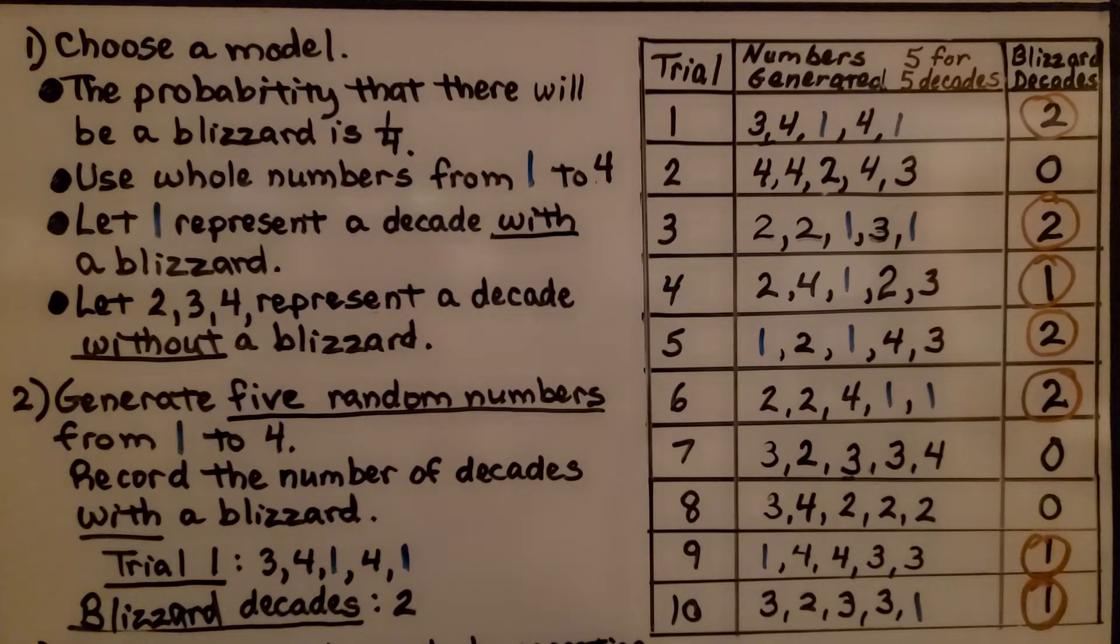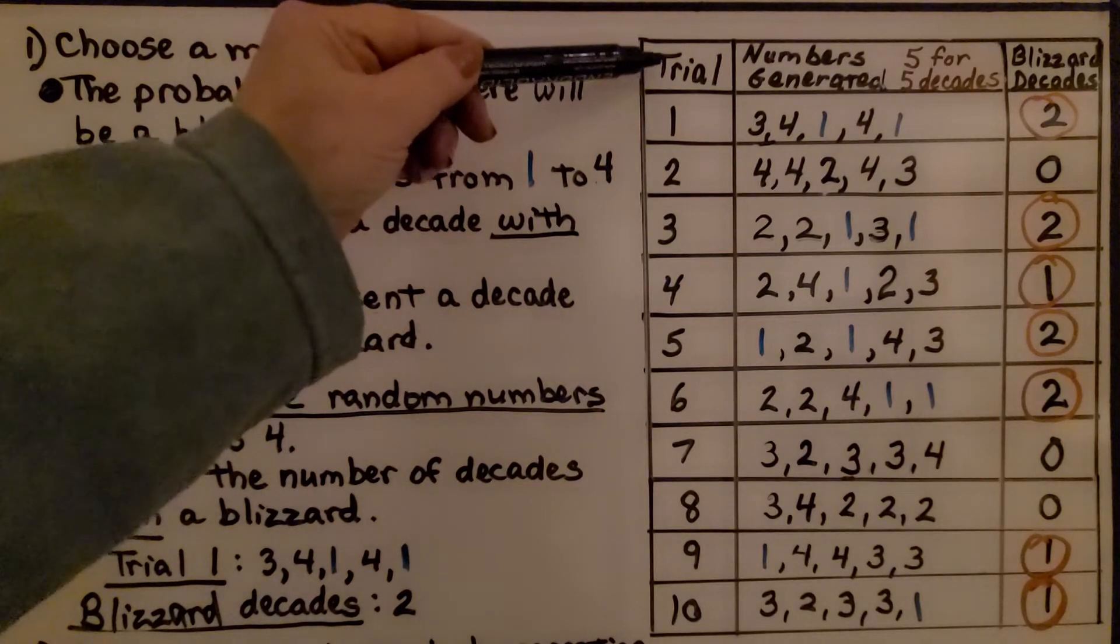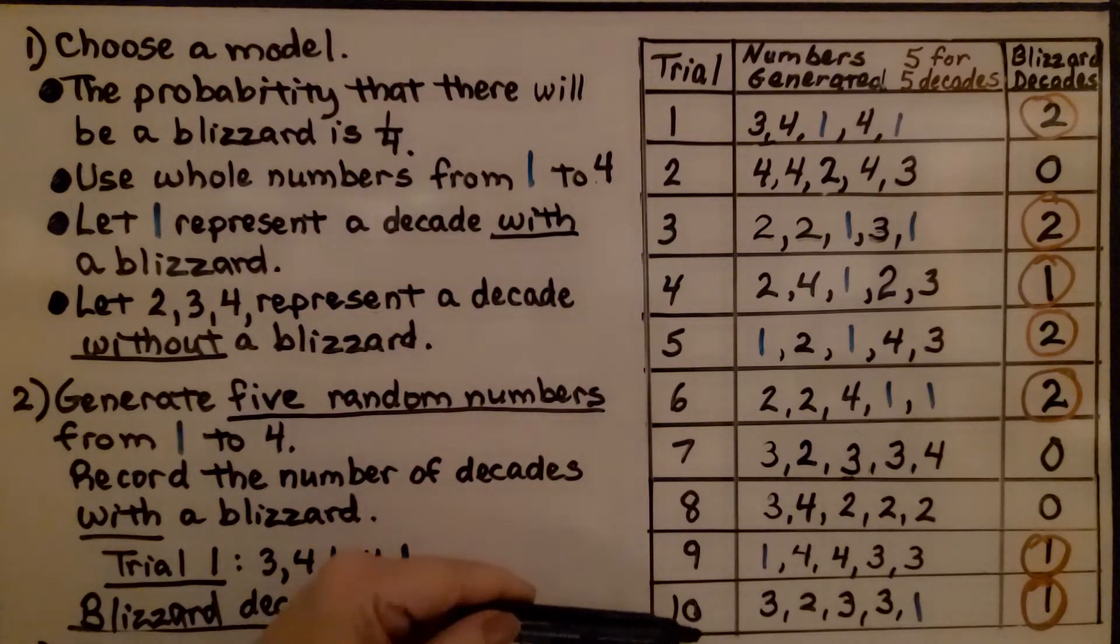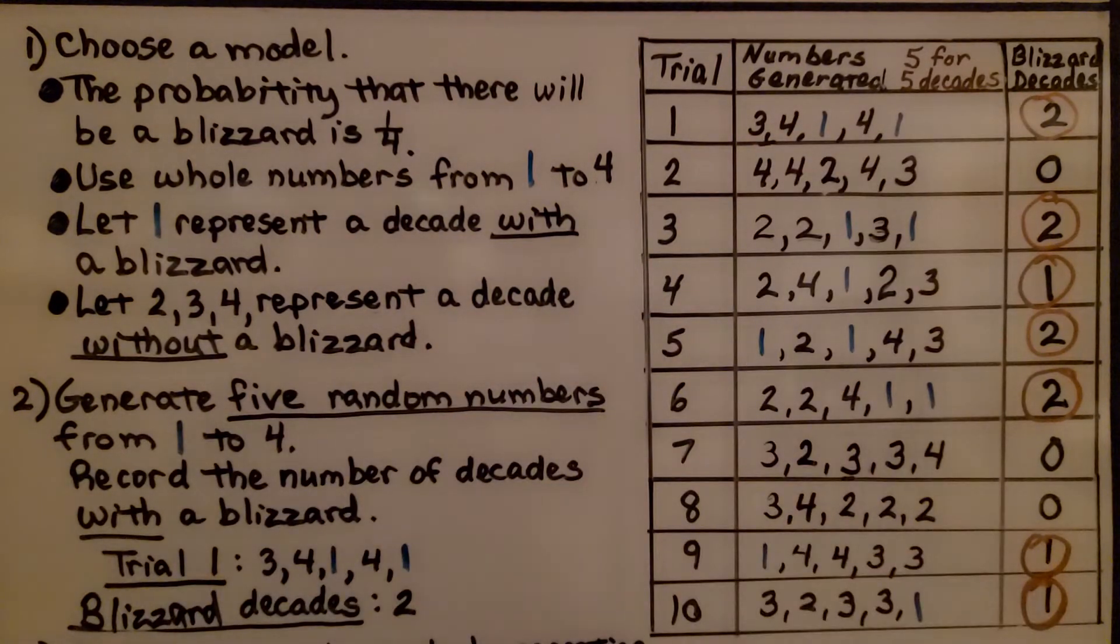The first thing we do is choose a model, and I chose a table with trial numbers, the numbers I generated, and the blizzard decades. The probability that there will be a blizzard is one-fourth. It told us 25%. We're going to use whole numbers from one to four. We're going to let one represent a decade with a blizzard, and let two, three, and four represent a decade without a blizzard.